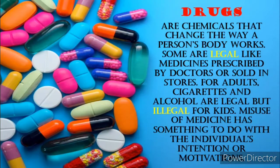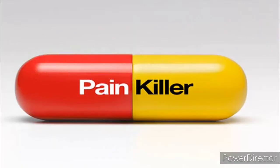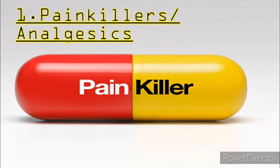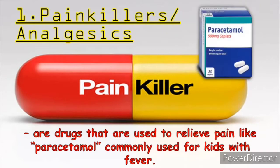Misuse or abuse of medicine has something to do with the individual's intentions or motivations when using or taking medicines. These are the most commonly abused prescribed drugs that fall into three categories. First, we have painkillers or analgesics — drugs that are used to relieve pain, like paracetamol, commonly used for kids with fever. An analgesic is any member of the group of drugs used to achieve analgesia, or relief from pain. Analgesic drugs act in various ways on the peripheral and central nervous systems.